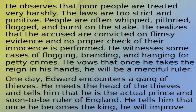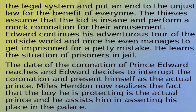One day, Edward encounters a gang of thieves. He tells the head of the thieves that he is the actual prince and soon-to-be ruler of England, and that once he becomes king he will improve the legal system and end unjust laws. The thieves assume the kid is insane and perform a mock coronation for their amusement. Edward continues his adventurous tour of the outside world and at one point manages to get imprisoned for a petty mistake, learning about the situation of prisoners in jail.